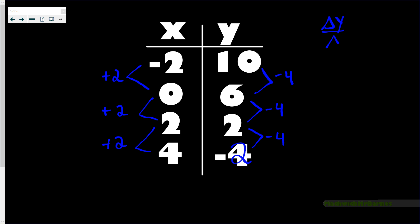That triangle symbol means 'change.' So negative four divided by two equals negative two. That means as x goes up by one, y goes down by two — that's what that rate of change number means. It's what happens for every one unit change of x.